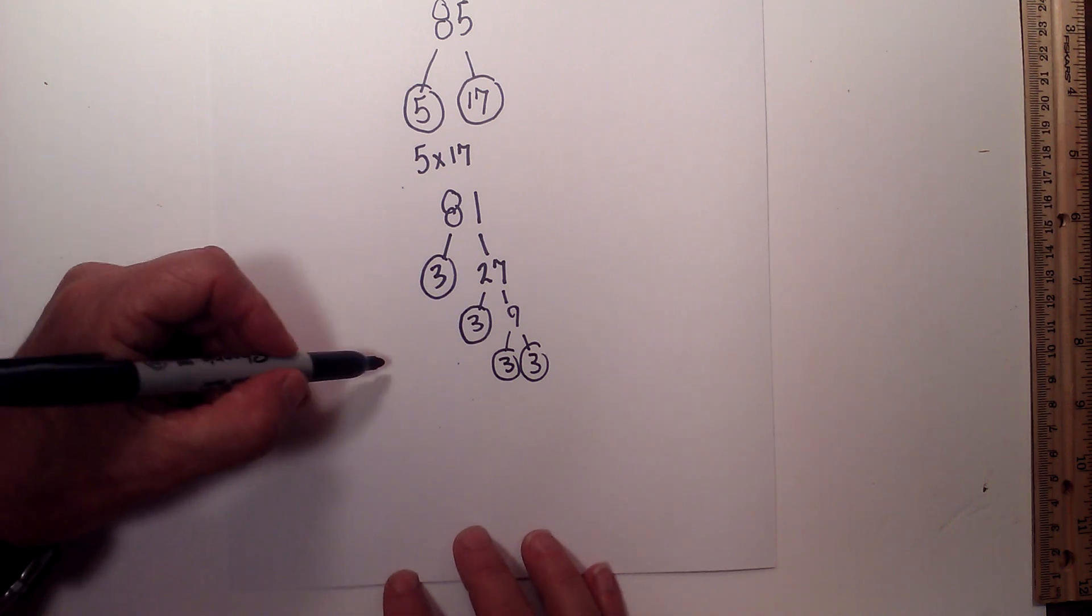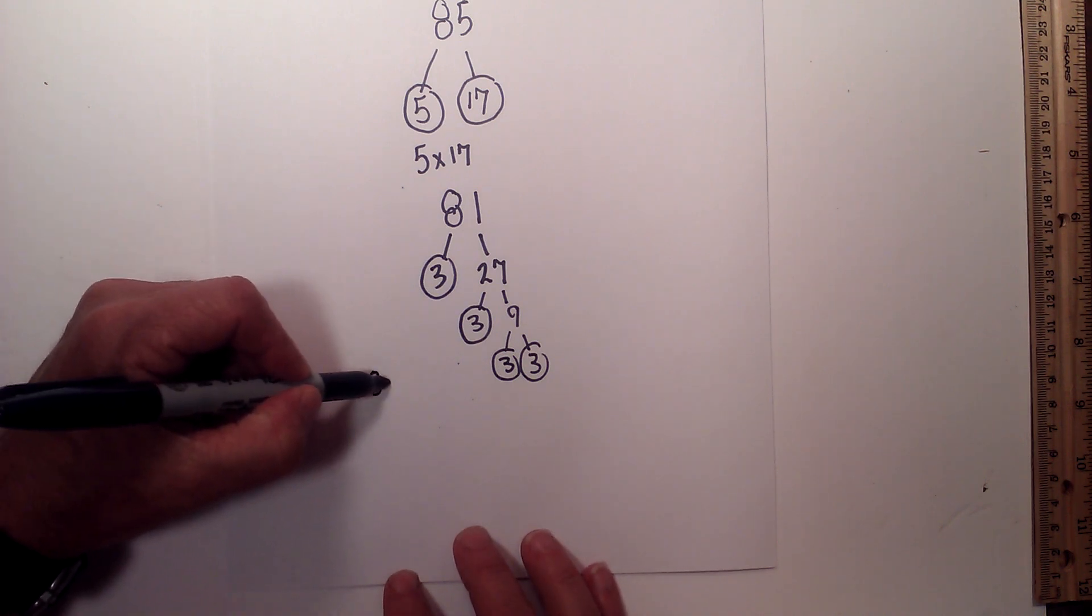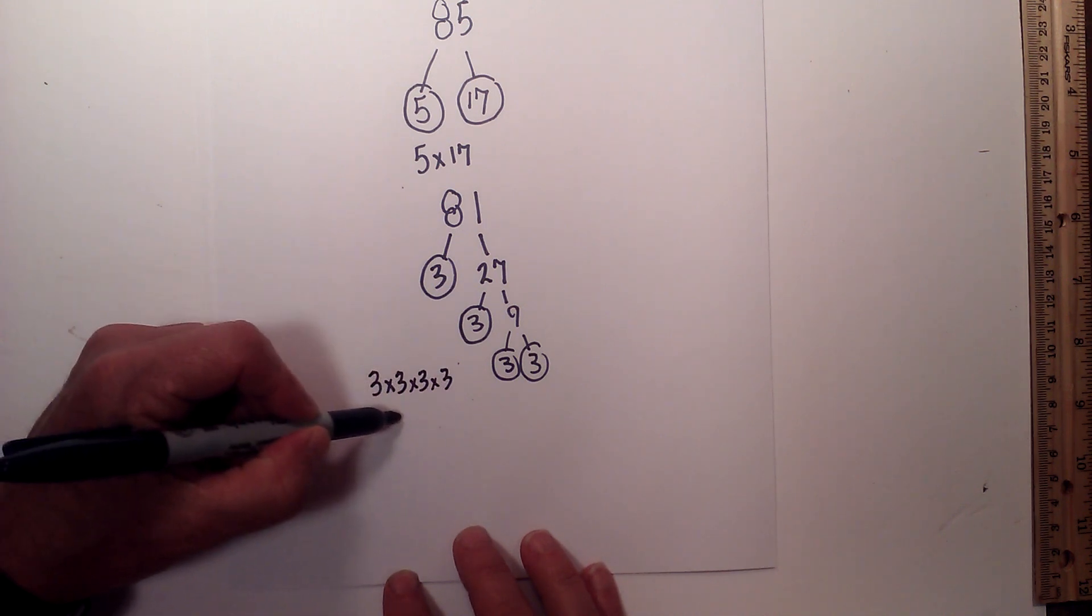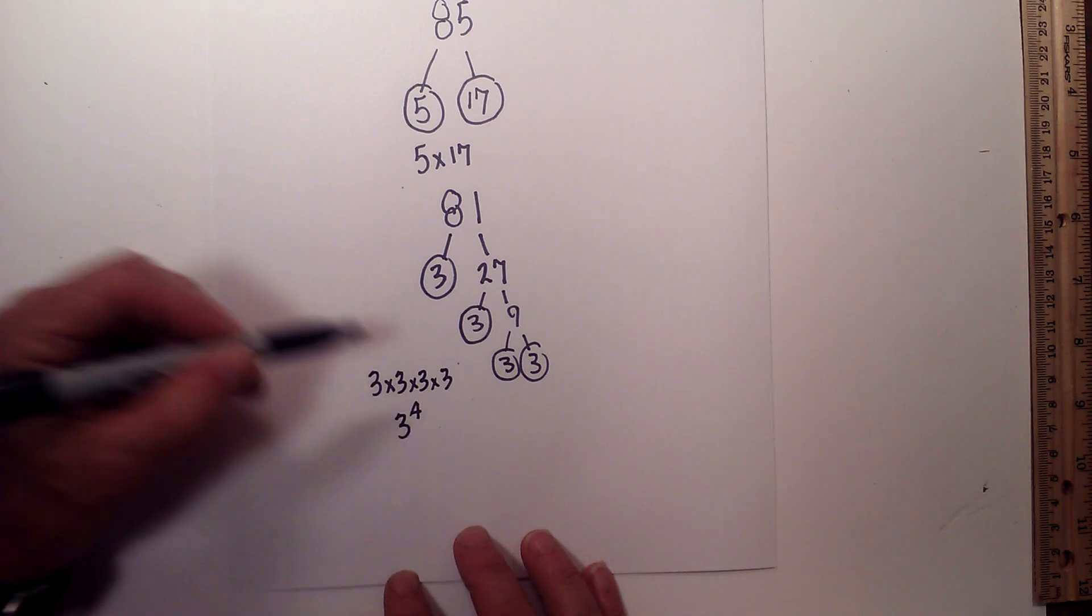So now the prime factorization is 3 times 3 times 3 times 3. Or you could just write 3 to the 4th.